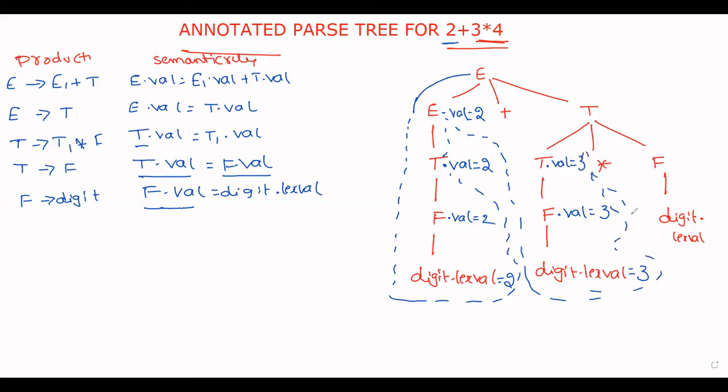Here this value is equal to 4. F dot value is equal to 4. Now what is the T dot value? Here observe the equation carefully. T dot value. T dot value is equal to T dot value into F dot value. So 3 into 4. This value is 12.